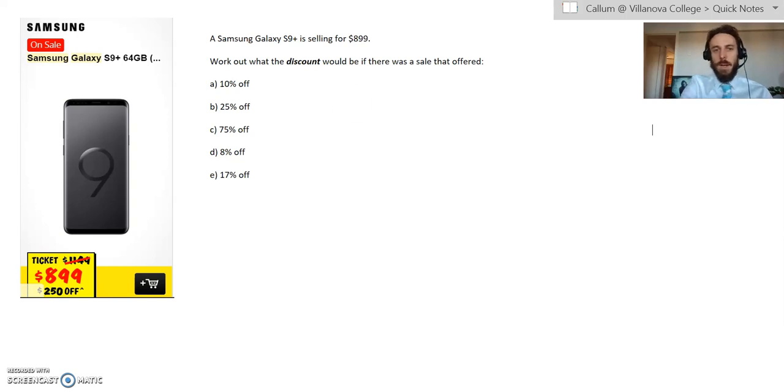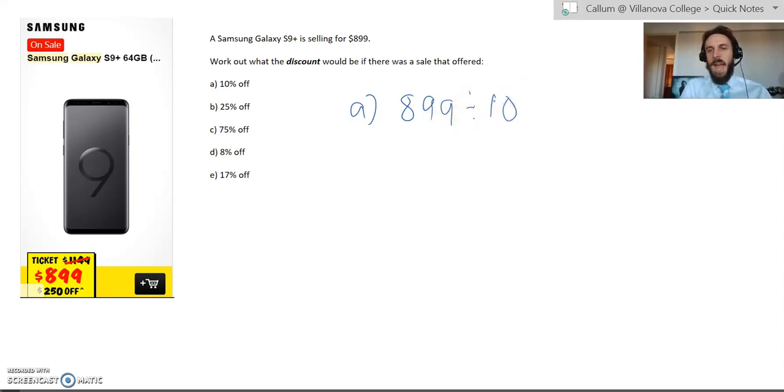So let's do the first one. In terms of question A, working out what 10% of $899 is, it's a little bit hard to show working out but if we're working out 10%, basically what we want to do is just take our total and then divide it by 10. So in terms of working out, all that you really need to do is put it in a nice number sentence, $899 divided by 10. And remember,